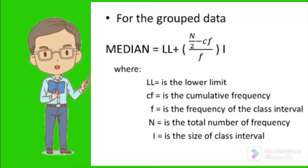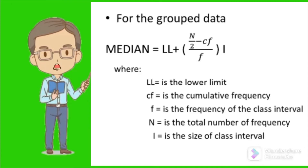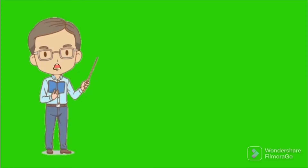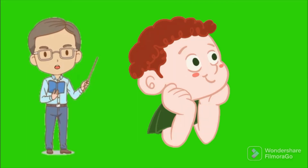For grouped data, we use the formula: Median = LL + [(N/2 − CF) / F] × I. Where LL is the lower limit of the median class; CF is the cumulative frequency; F is the frequency of the class interval; N is the total number of frequency; and I is the size of the class interval.